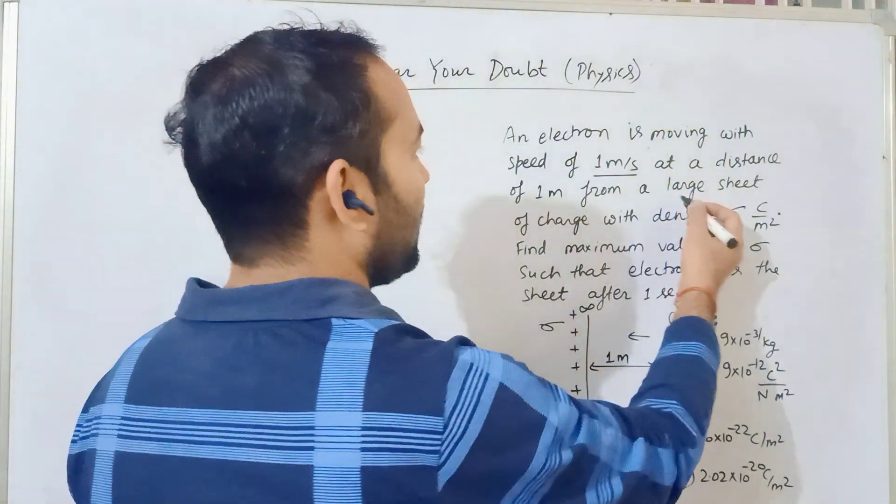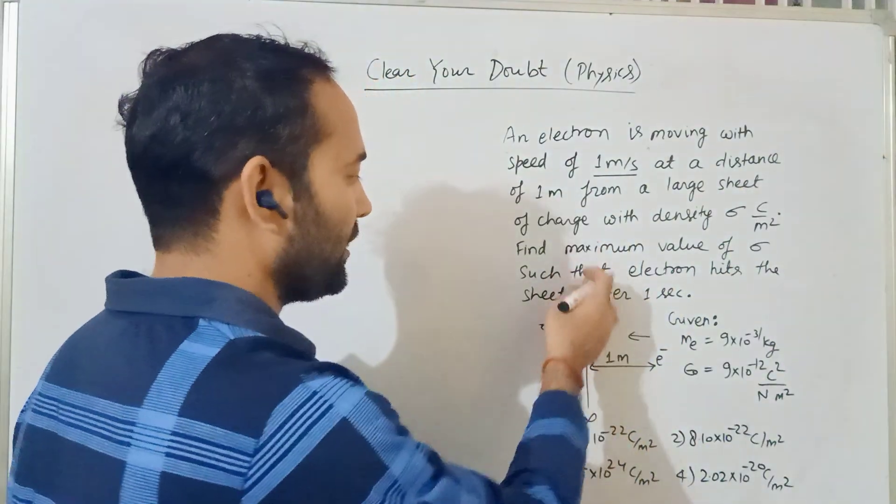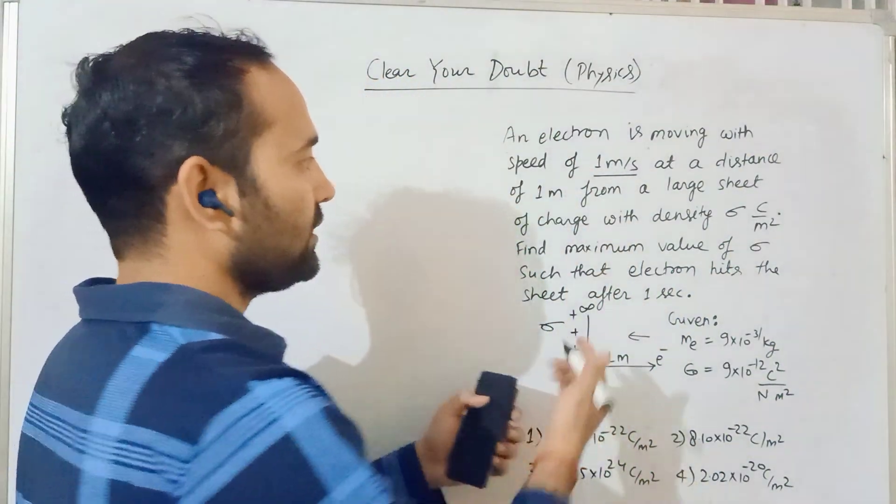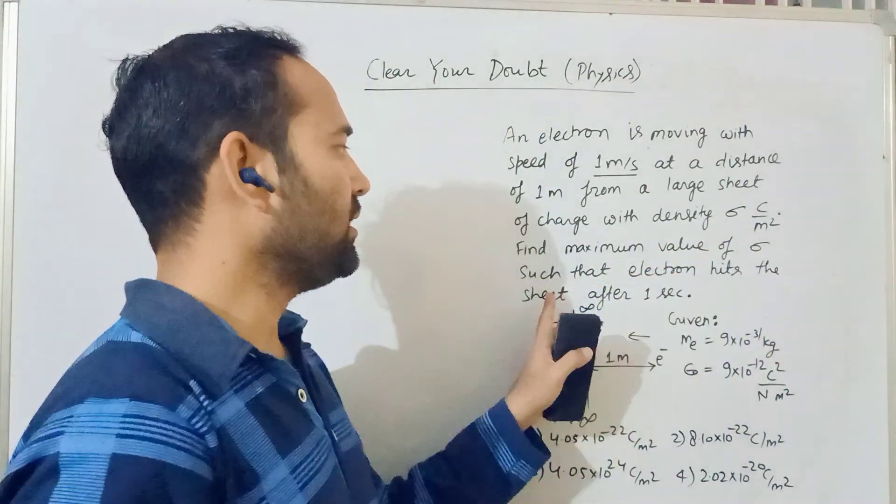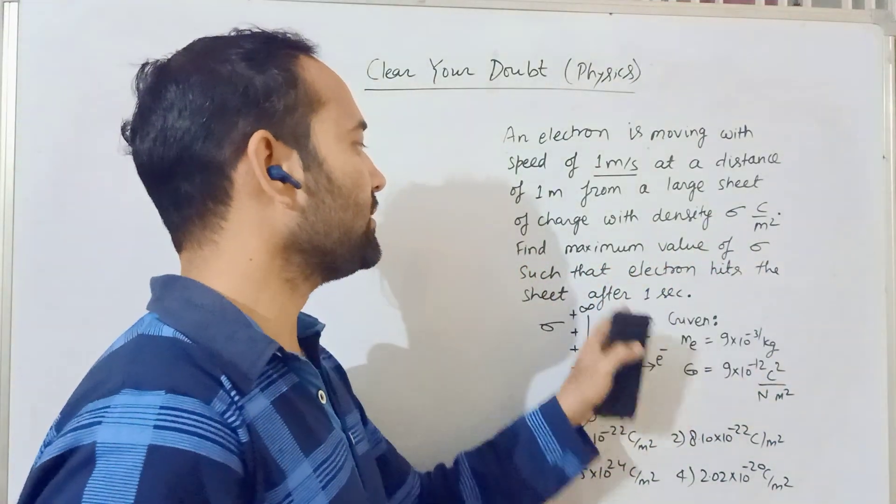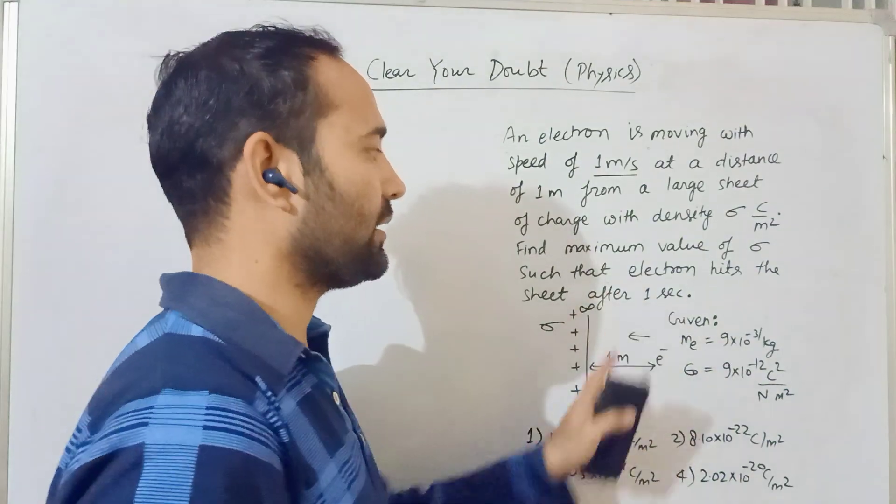This is an infinite charge sheet with charge density sigma. Find the maximum value of sigma such that the electron hits the charge sheet after 1 second.